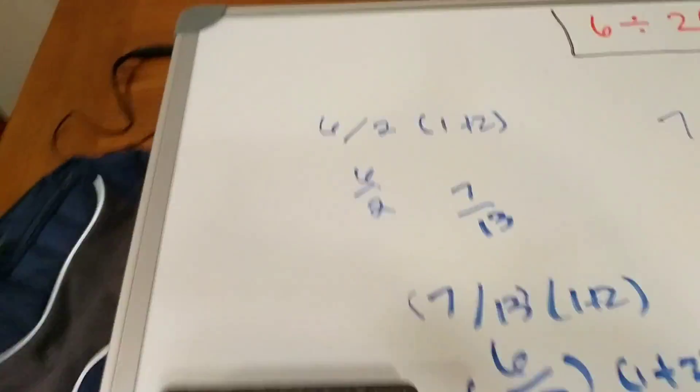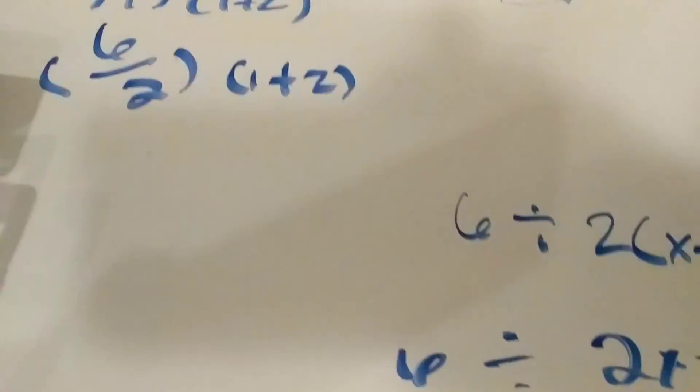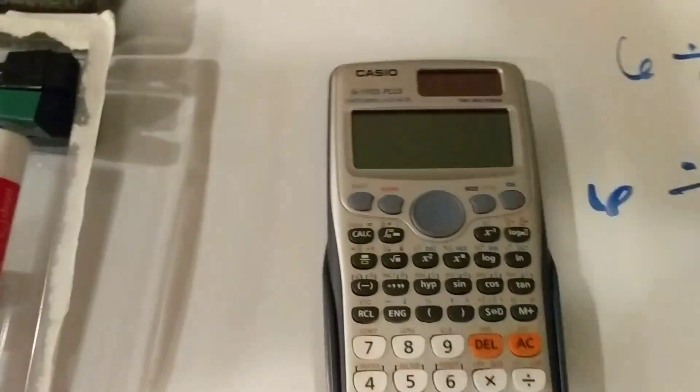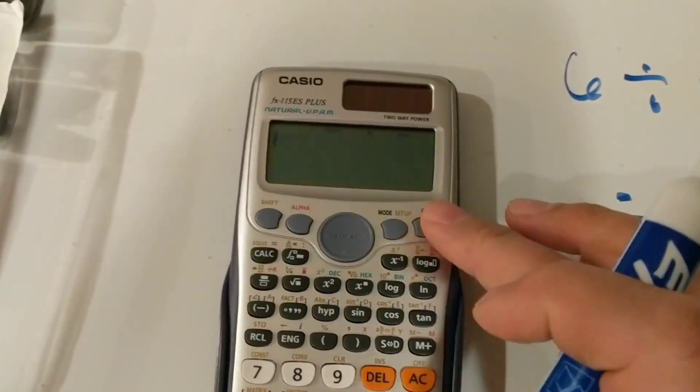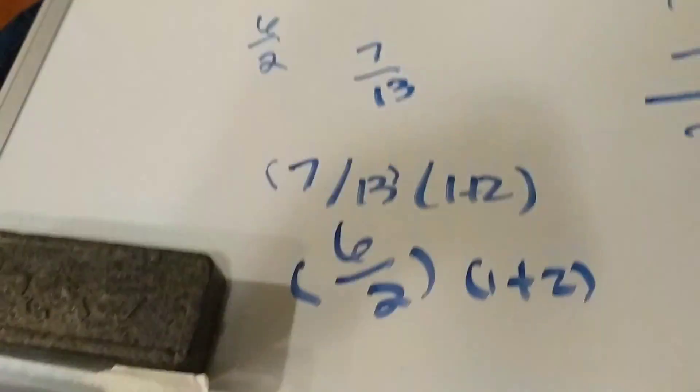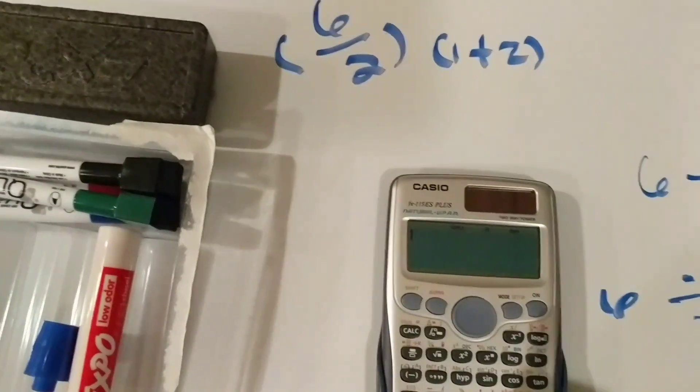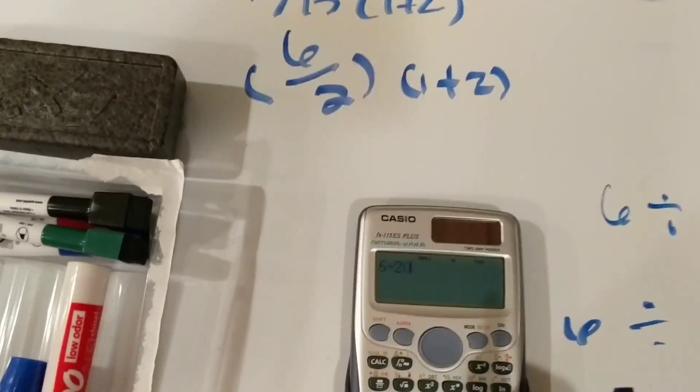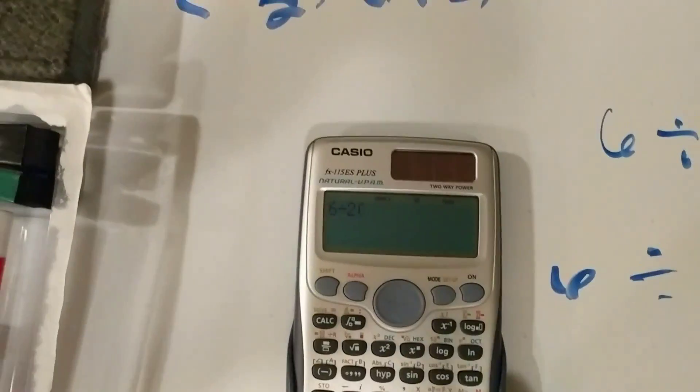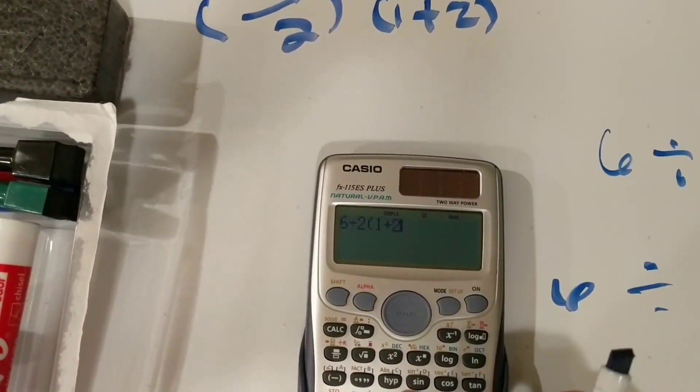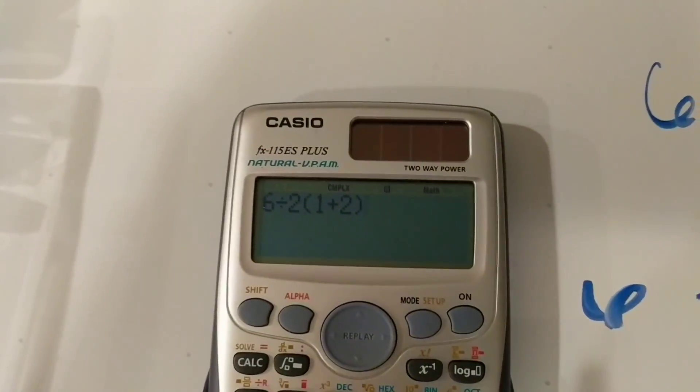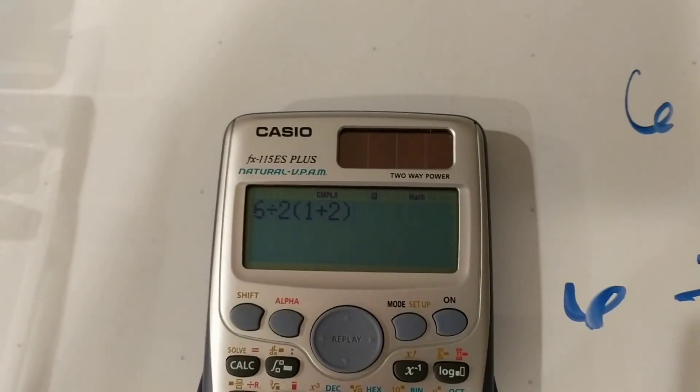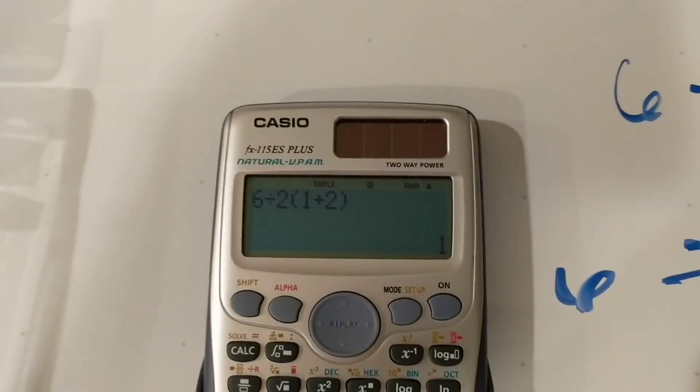if you use the Casio calculator, and this one here is able to recognize this type of notation, and you say 6 divided by 2, parentheses, 1 plus 2, close parentheses. Well, it knows that 2 very well could have just been factored out of that parentheses there. And it gives you a 1.